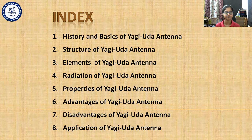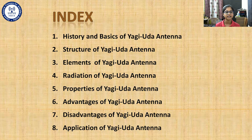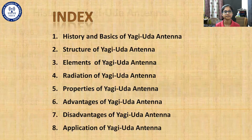Third, the elements of the Yagi-Uda antenna — what elements are present in it. Fourth, the radiation of the Yagi-Uda antenna — how it radiates energy. Fifth, the properties of the Yagi-Uda antenna. Sixth, the advantages — what are the benefits of using a Yagi-Uda antenna. Seventh, the disadvantages — along with the advantages, some disadvantages are also there. And eighth, the applications of the Yagi-Uda antenna — we will see some of its applications.